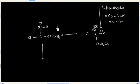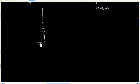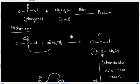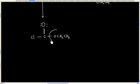And finally we have acid-base reaction, and then we will have this product. So if you see the overall reaction, one chlorine group is substituted by OCH2CH3 group.